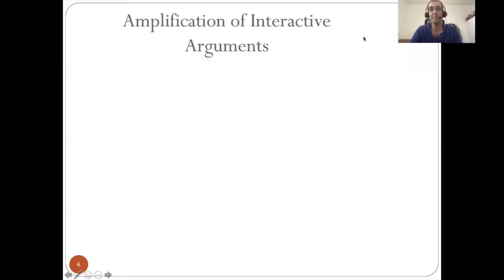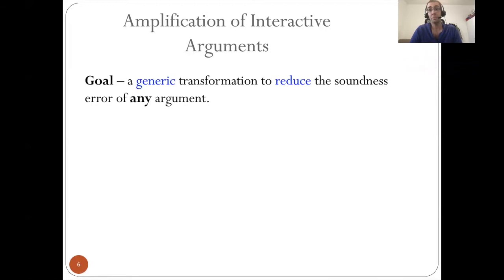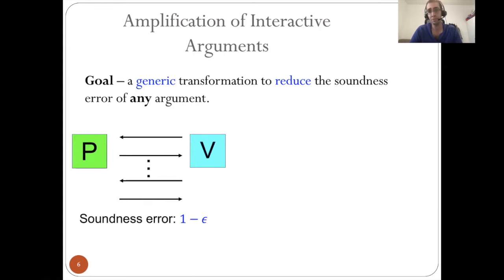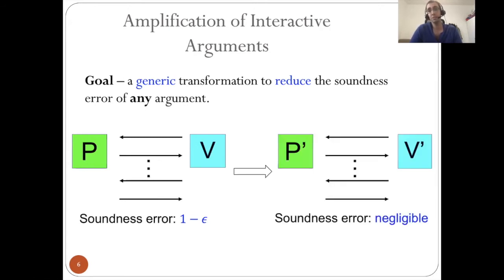In this work, we are interested in amplification of interactive arguments, where the main goal is to find a generic transformation to reduce the soundness of any argument. Say we start with an argument PV that has soundness error 1 minus epsilon, almost no soundness guarantee, and we want to turn it into a similar argument with soundness error negligible using a generic transformation. If we have a generic method, then automatically we can improve the security of many cryptographic primitives, for instance the binding guarantee of a statistical hiding commitment.